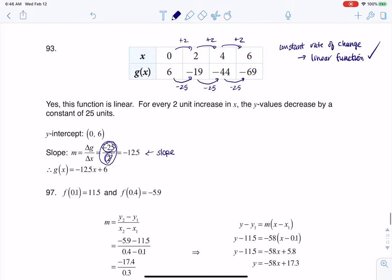So you could put your numbers into the point slope formula, which would have been y minus y1 equals m times x minus x of 1.